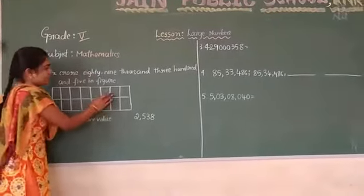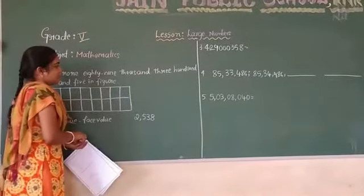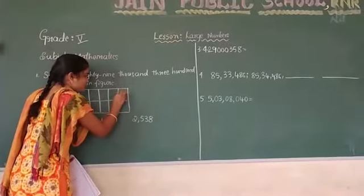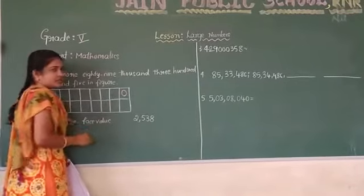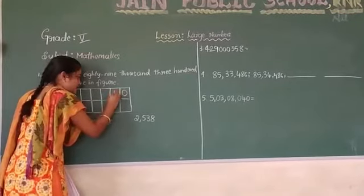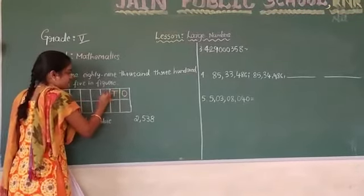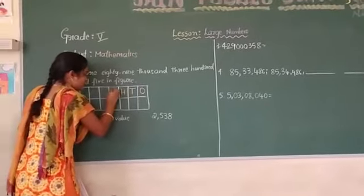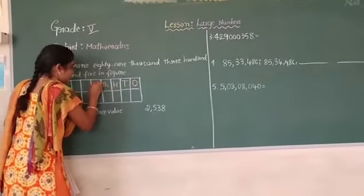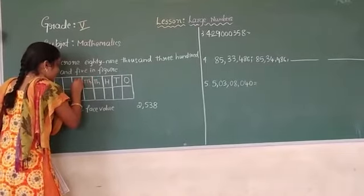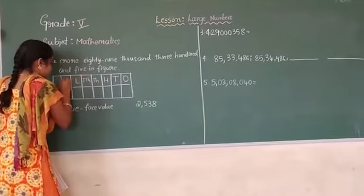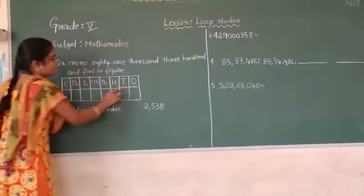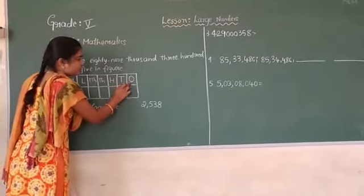In the Indian place value chart, the number always starts from the units place, then tens, then hundreds, then thousands, ten thousands, lakhs, ten lakhs, and crores. We have to start placing digits from the units place.